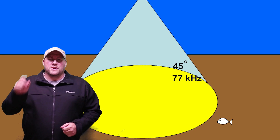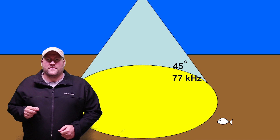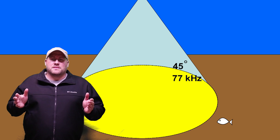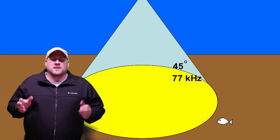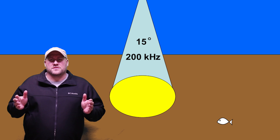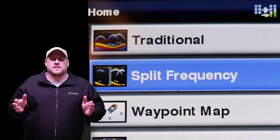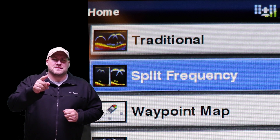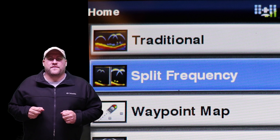Now before I go I'm going to show you one more cool feature the Garmin Striker 4 fish finder has. We've talked about the 77k hertz and the 200k hertz, but in the menu settings you can have the best of both worlds using the split frequency view. The split frequency view gives you side-by-side sonar images from the 77k hertz beam and the 200k hertz beam on one screen.